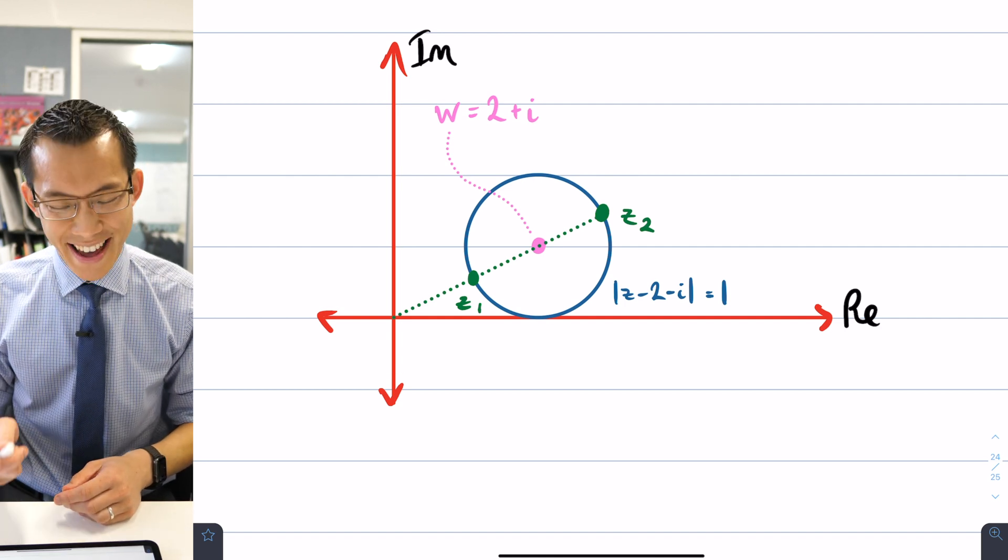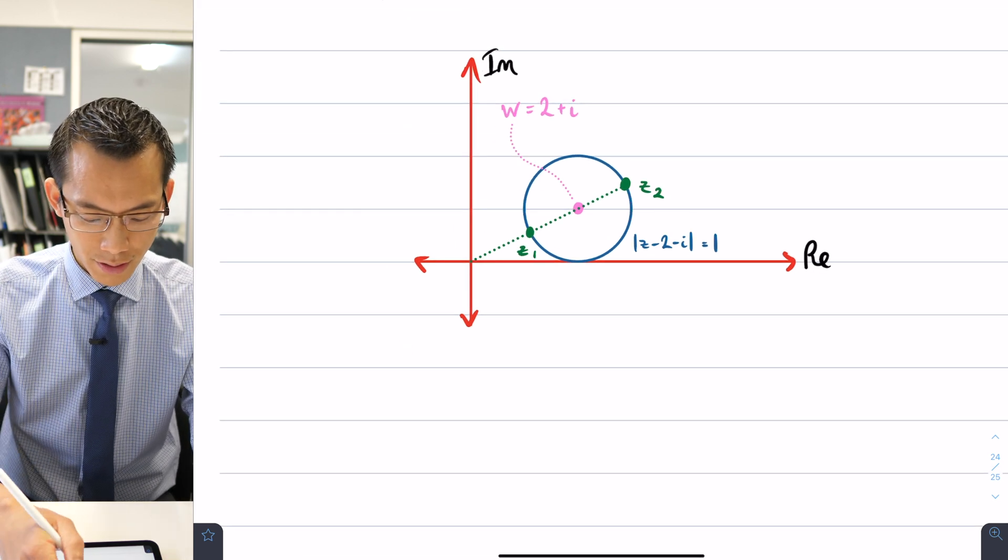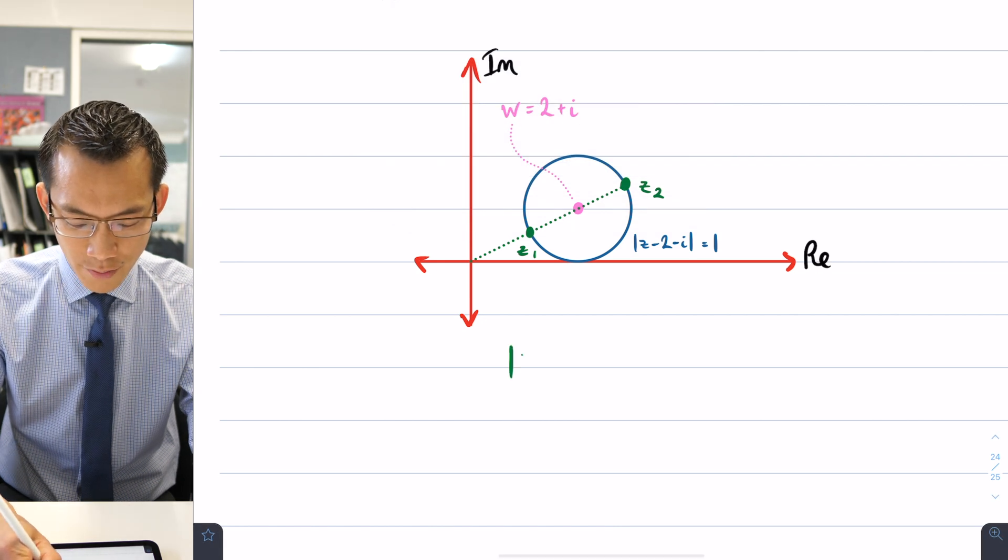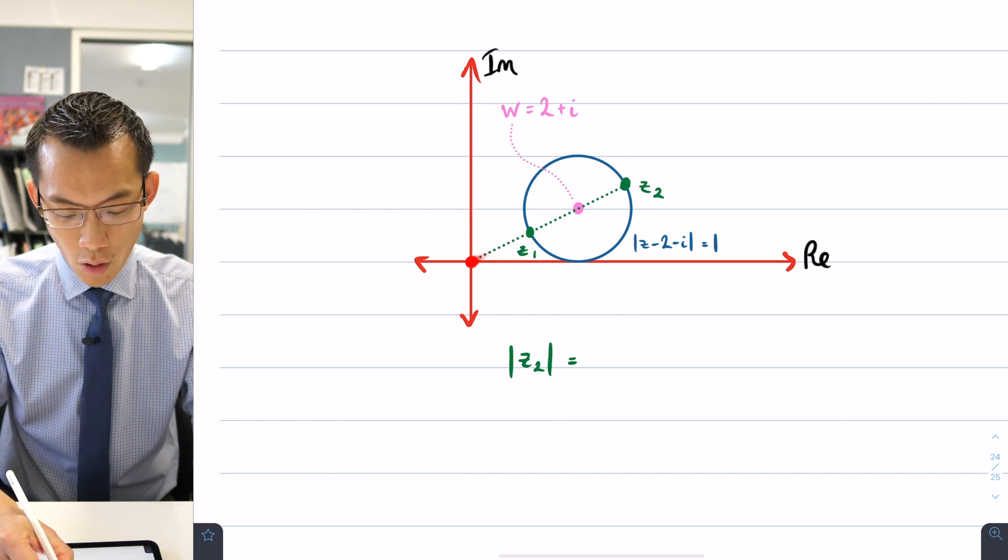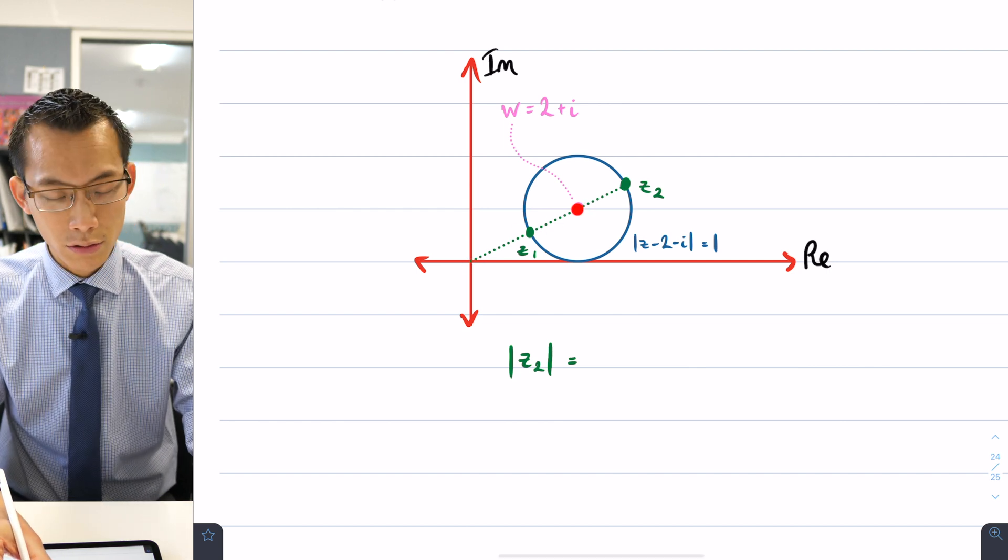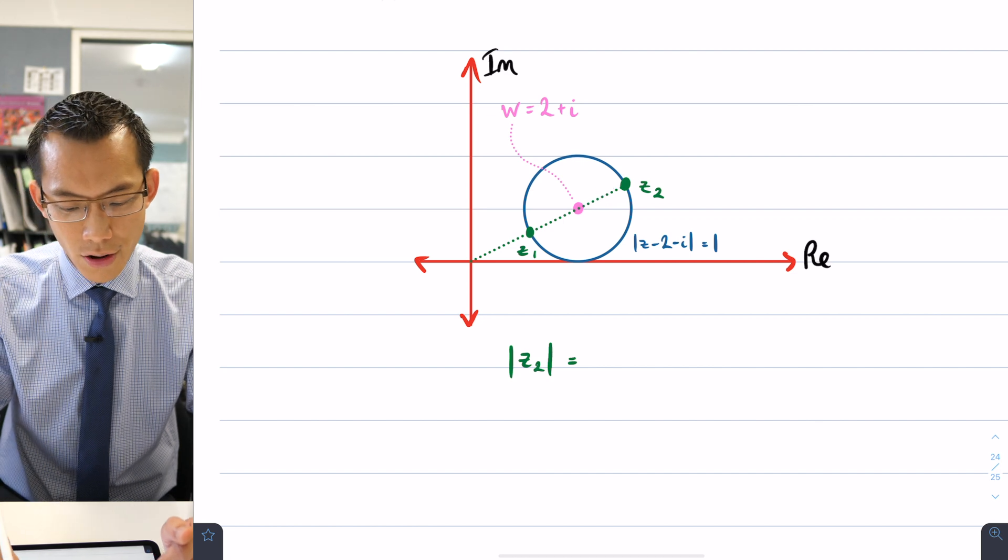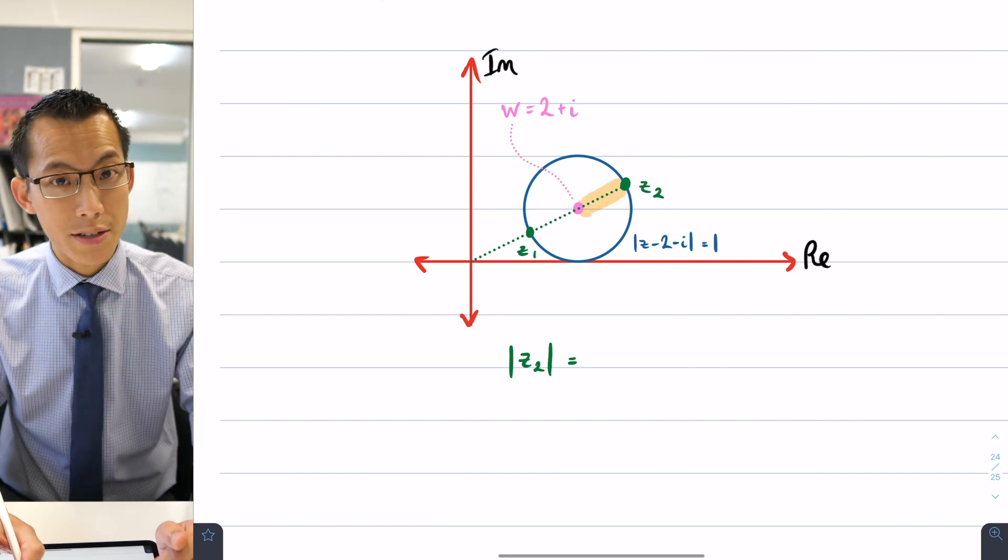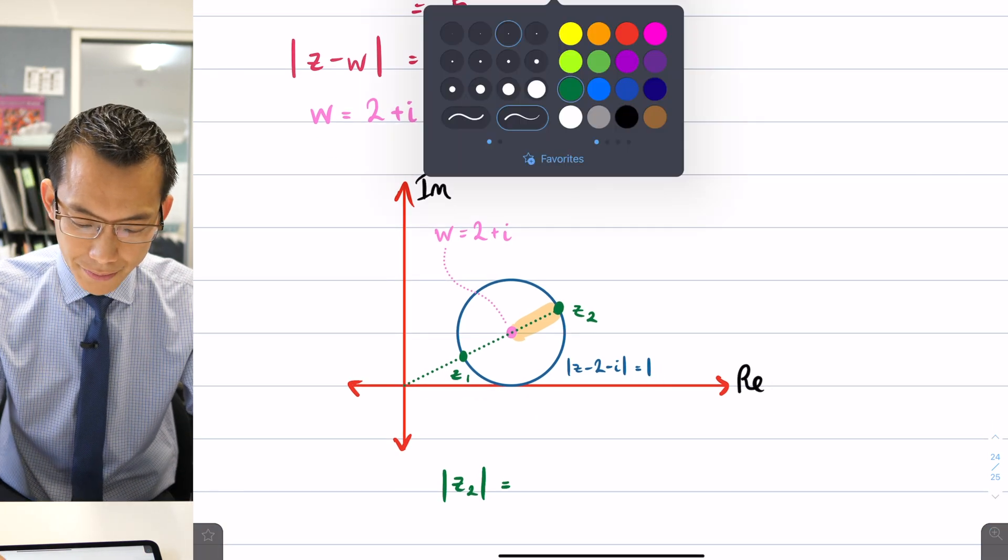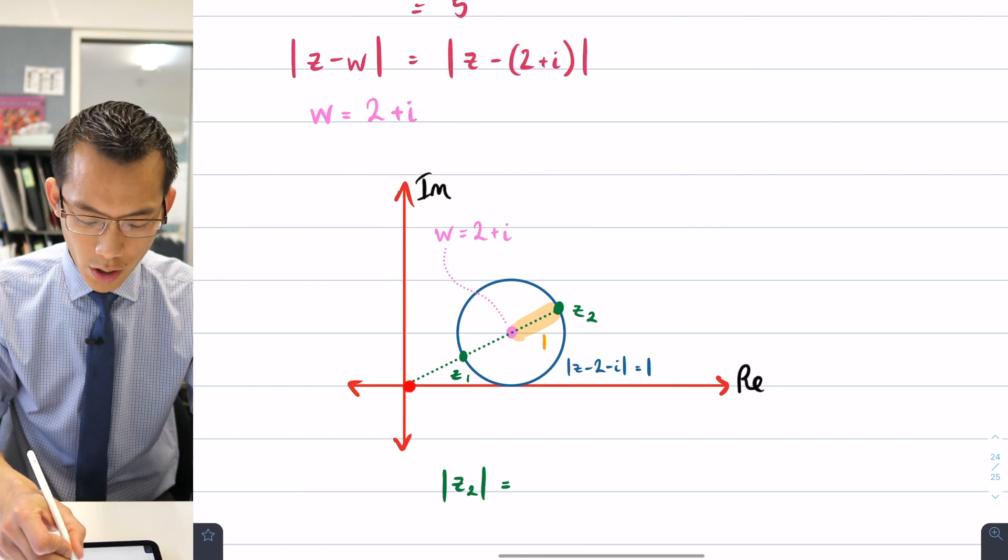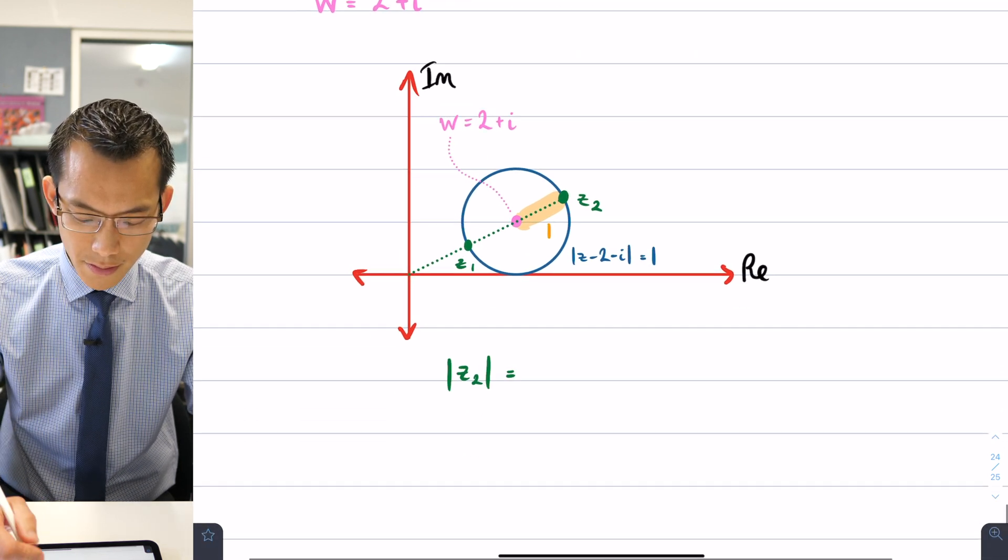All right so how do I find each of these? Well even though I've numbered them z1 and z2 I think it might be easier to see how to find z2 first. How do we find that modulus? Well the absolute value of z2 is comprised of two different pieces. You've got to get from the origin all the way to w, we can calculate that in a second, and then we've got to get from w all the way to z2 but that there, that is the radius and we already know back from the original equation provided to us that that radius is one. So if that's one then all I need to do is work out the modulus of w and then add one to it and I'll have my distance.